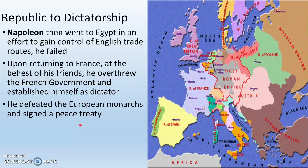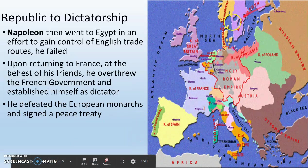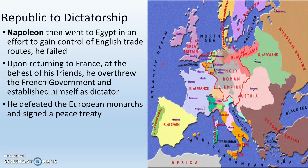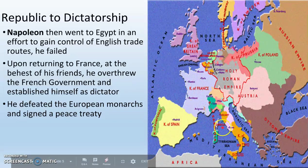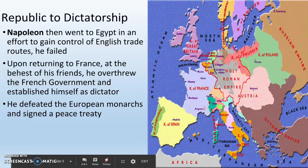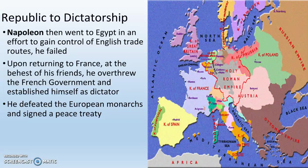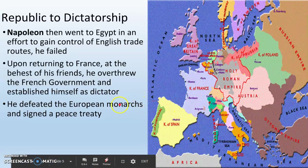He successfully defeats the European monarchs and forces them to sign a peace treaty, though this peace is not going to last very long — they're still terrified of Napoleon and the revolution in France. This is a map of Europe right before Napoleon goes on a conquering spree. You can see France is pretty big, Corsica is right here, Italy is still broken into pieces, the Holy Roman Empire is still hanging around barely, and we've got Spain down in the south.